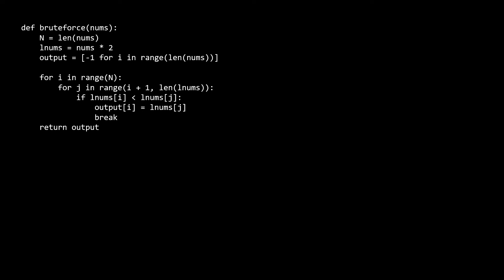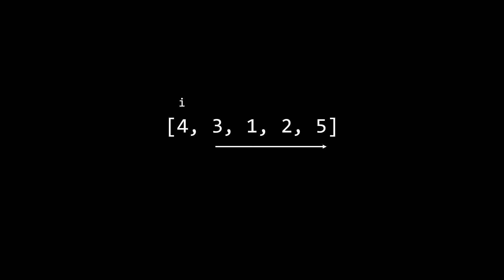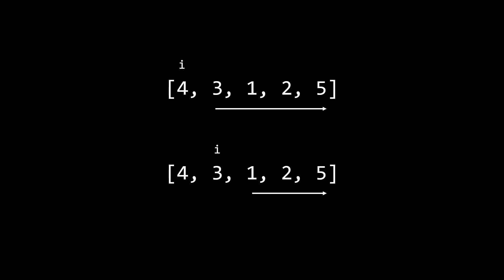Now that we've seen the brute force solution, let's try to improve it. The costly step is the nested j for loop, which runs on the order of n times per iteration of the outer loop. This inner loop is redundant because it doesn't make use of information already learned. For example, when i is on the four, the j loop iterates over three, one, and two before finding five. When i moves to the three, the j loop again covers one, two, and five — but from the previous iteration we could have learned that three's next greater element is five. We can optimize by remembering elements that don't yet have a next largest, and when we encounter a larger element, determine which remembered elements it satisfies.